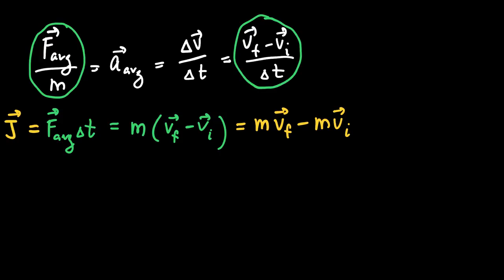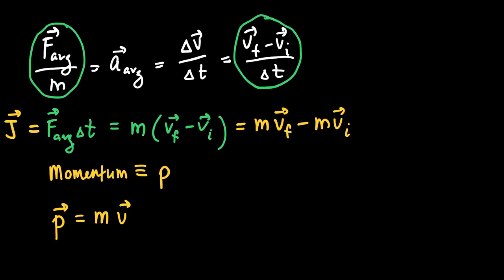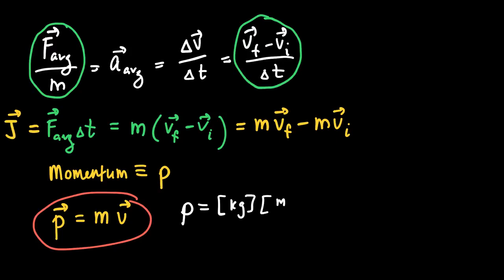So impulse equals F-average times delta-T, but it also equals mass times a change in velocity — written as m times v-final minus m times v-initial, where velocities are vectors. The product m times v is a new quantity we define called momentum. We use the lowercase letter p for momentum. Momentum, which is a vector, equals the mass of an object times its velocity vector. Mass is in kilograms and velocity in meters per second, so the units of momentum are kilograms meters per second.